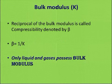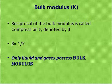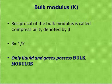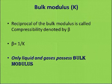From bulk modulus we can get compressibility. Compressibility beta is equal to 1 upon bulk modulus K. In MCQ, you may be asked what is compressibility — the answer is 1 upon K. Also important: only liquids and gases show bulk modulus because it is related to volume, not solids.